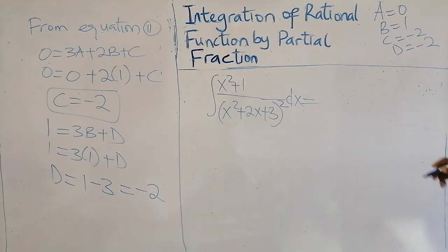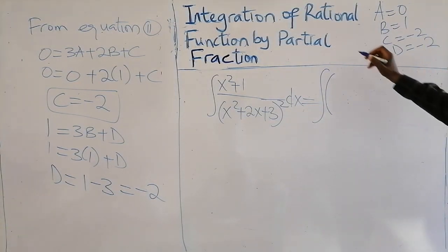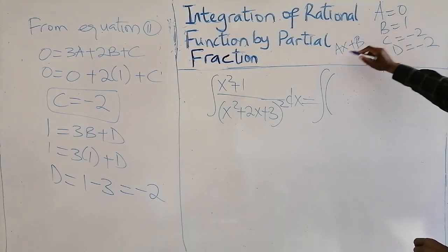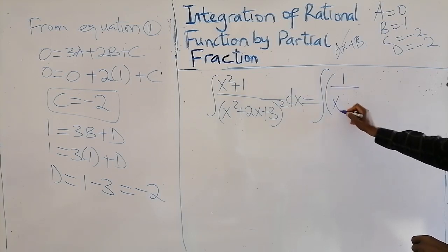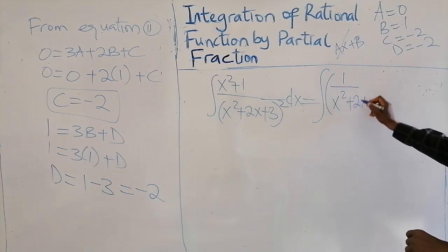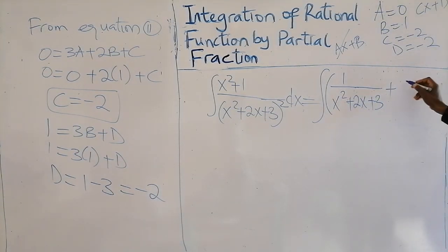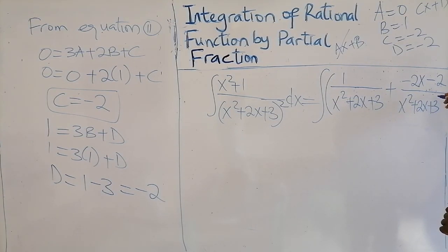So the integral equals the integral of this sum of functions. The partial fraction has ax plus b in the first part — since a = 0, that term cancels, leaving b = 1, so we have 1 over (x² + 2x + 3). Then plus the second part, cx plus d, which is (minus 2x minus 2) all over (x² + 2x + 3) squared.